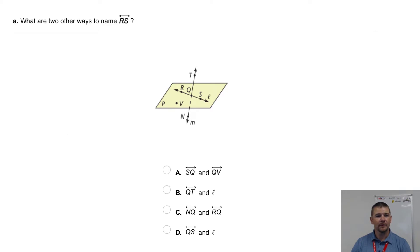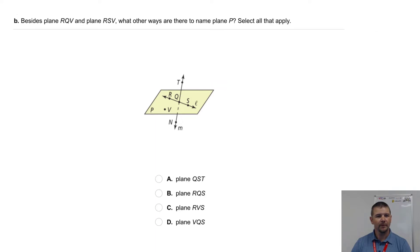Your turn, part A: what are two other ways to name line RS? Part B: besides plane RQV and plane RSV, what are other ways to name plane P? Select all that apply.